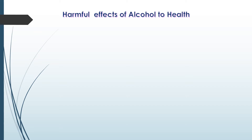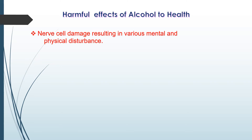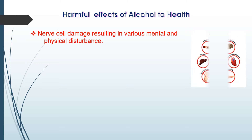Harmful effects of alcohol to health. If a person is consuming alcohol continuously, the person is alcoholic and that will affect their health. First: nerve cell damage. Nerve cell damage results in various mental and physical disturbances, because nerve cells send messages to the brain, causing both physical and mental disturbance.